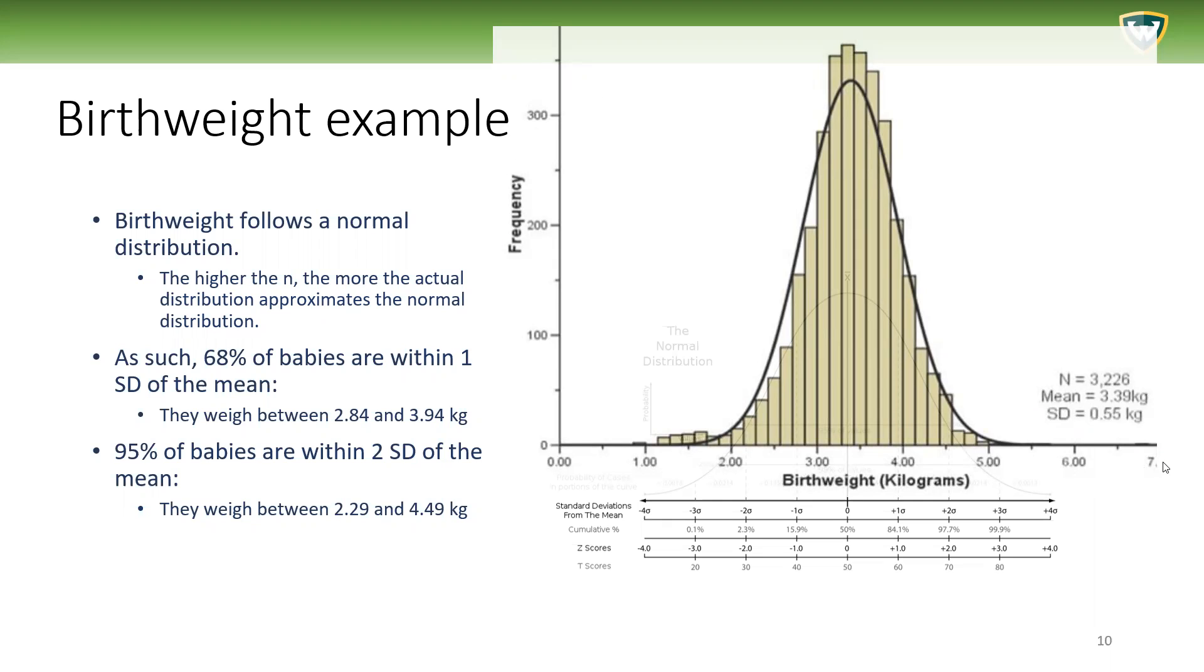Let's direct our attention to the graph here of this actual sample of birthweights measured. The sample used 3,226 babies. Obviously these are not all the babies that have ever been born on Earth—it's a sample, and you can see the sample approximates the normal distribution.